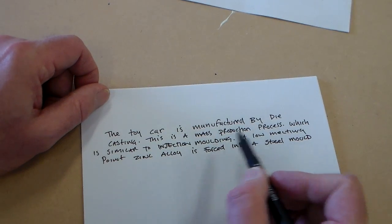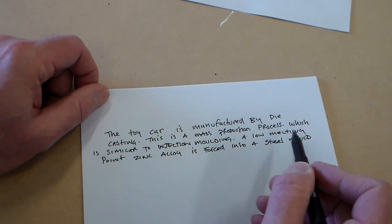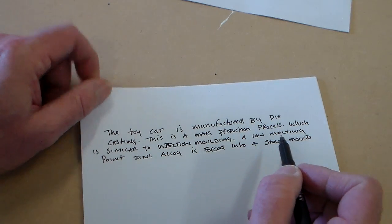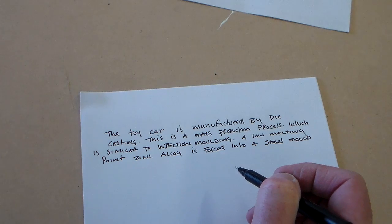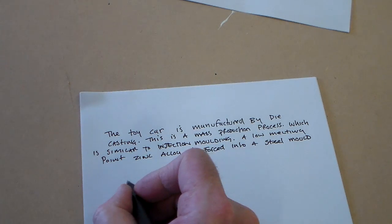So, the toy car is manufactured by die casting. This is a mass production process which is similar to injection moulding. A low melting point zinc alloy is forced into a steel mould.